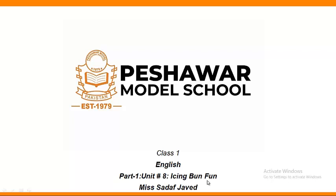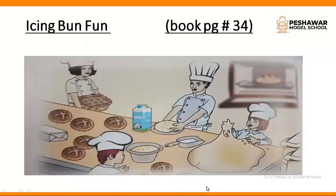This is part 1 of this unit, so we are going to start with the reading of the chapter. Kindly take out your books on page number 34. On page number 34, you will see the following picture: a chef is preparing a dough, they are making a bun, and his assistant is helping him in preparing the dough — that is the bun.